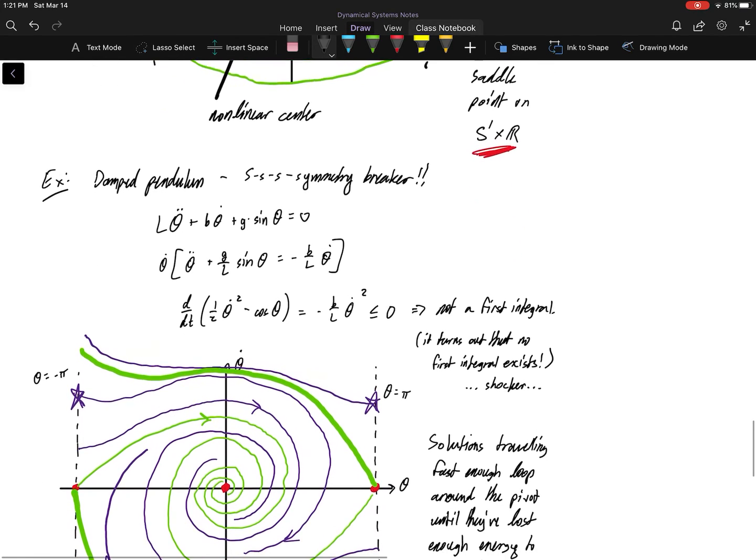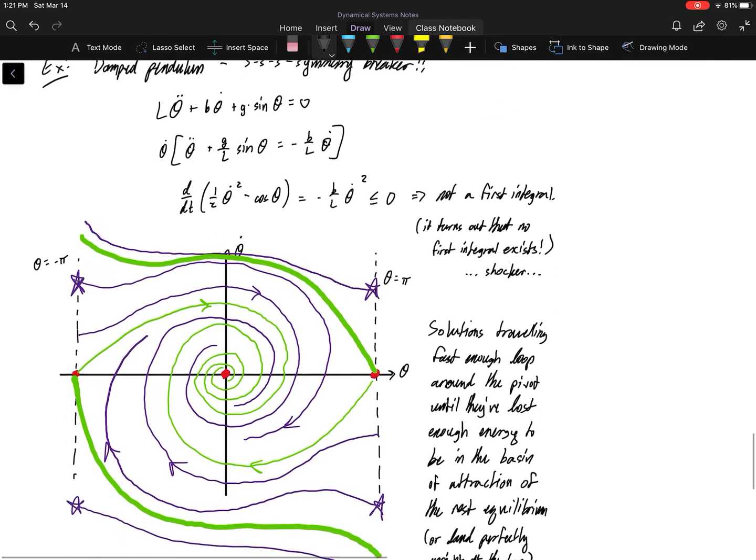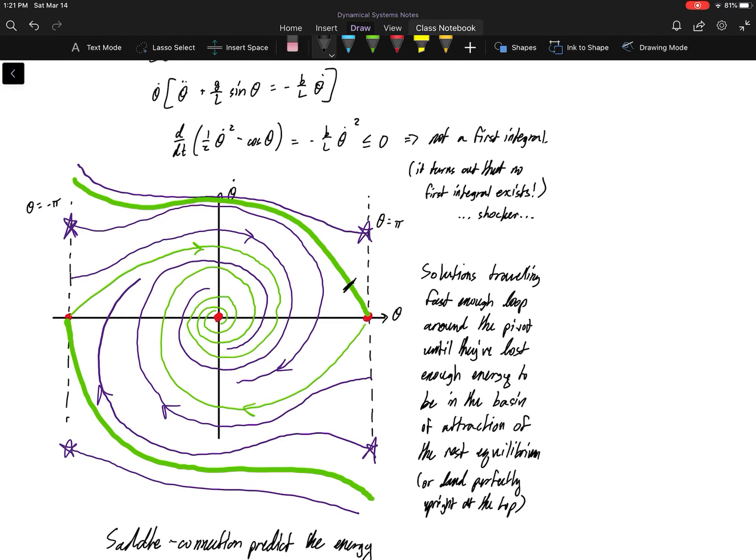But we can also play with the damped pendulum. And what we see here, I've actually drawn in from last time, these two new saddle can, or these two new, what would they be? They would be stable manifolds for the saddle, for the one saddle that's there. And the stable manifolds are actually separating out what kinds of behavior we can expect.